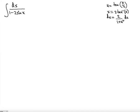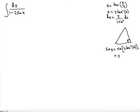Now, how do you find sine x? Sine x equals sine of 2 arctan(u). Using the double angle formula for sine, you know that it's going to be 2 sine of arctan(u) multiplied by the cosine of arctan(u).